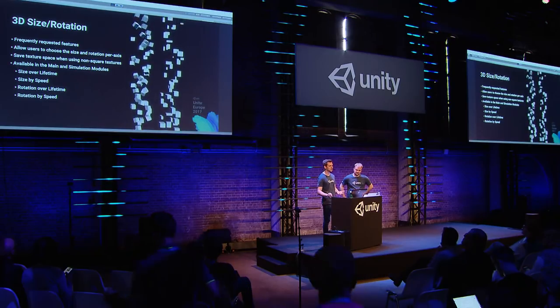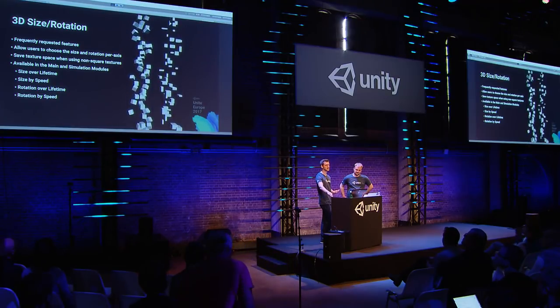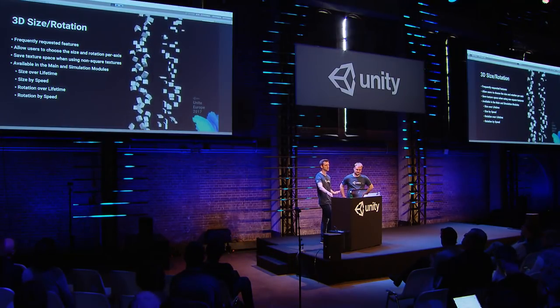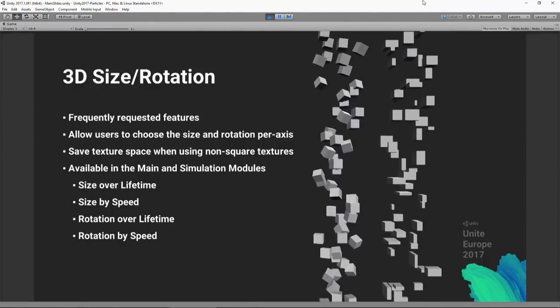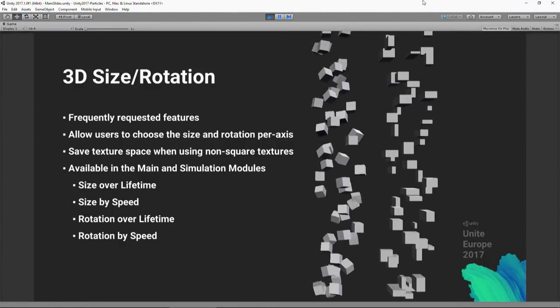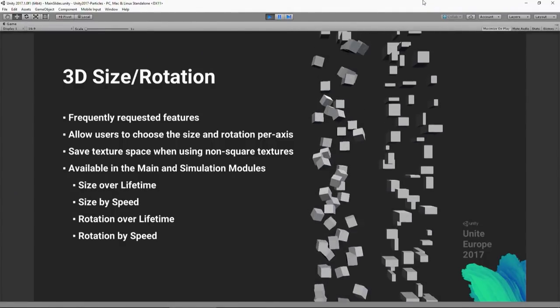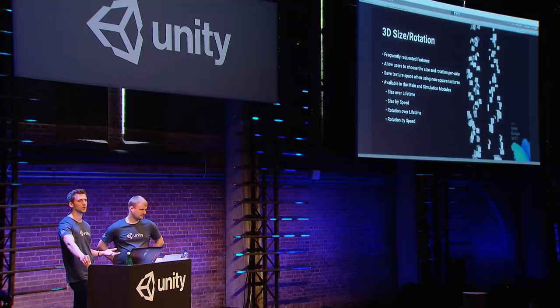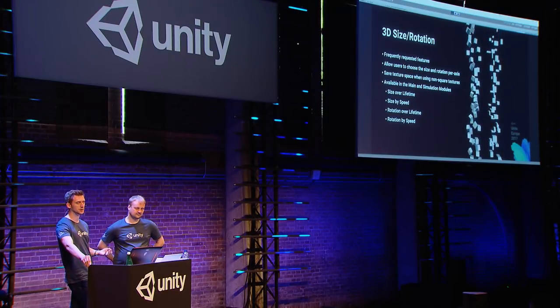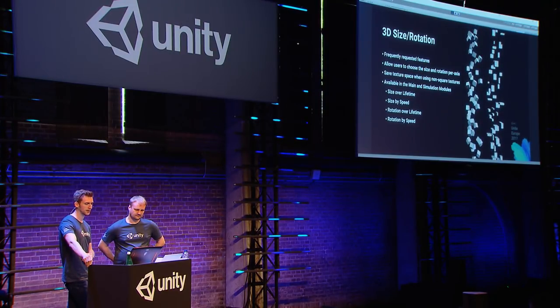You've got two ways of using this. If you want to set a start size or start rotation, you use the main module. If you want them to animate and change over the lifetime of the particles, the same options are available in the rotation and size modules. You just tick the 'separate axes' checkbox, and then you've got the same options for the X, Y, and Z axes.